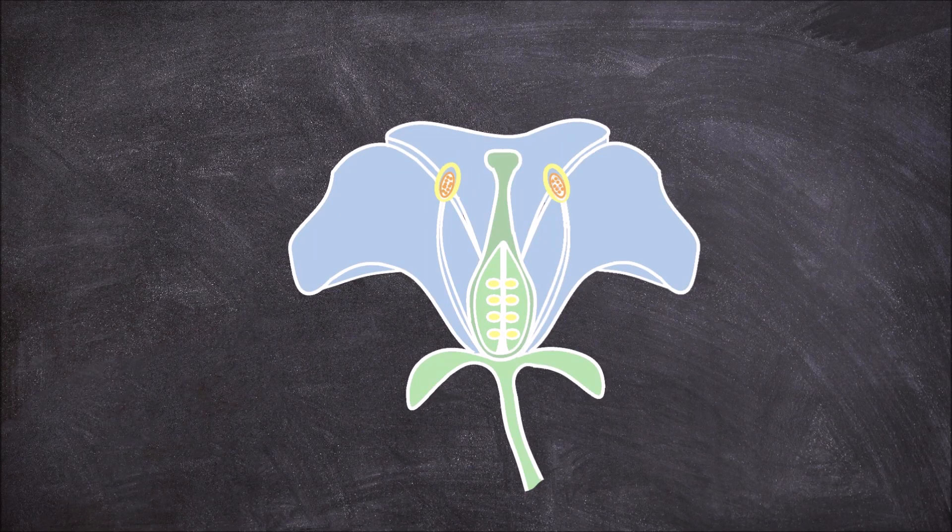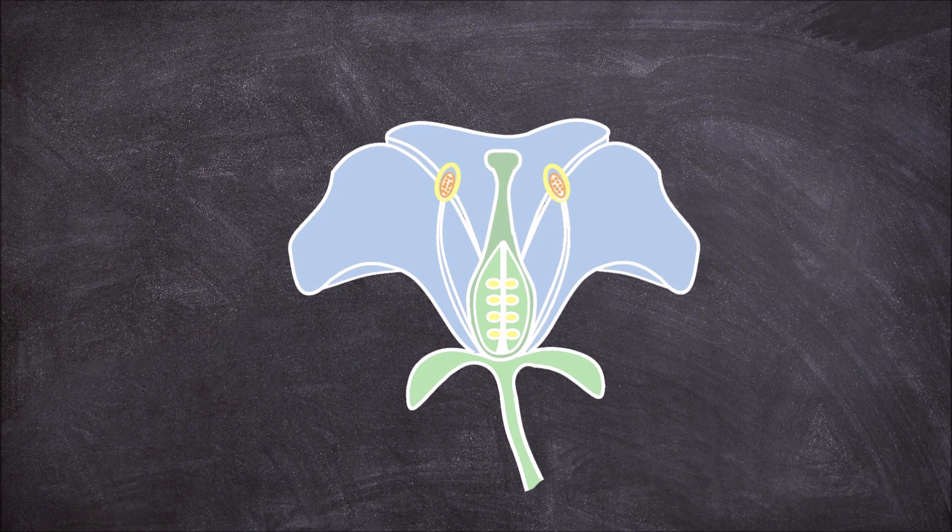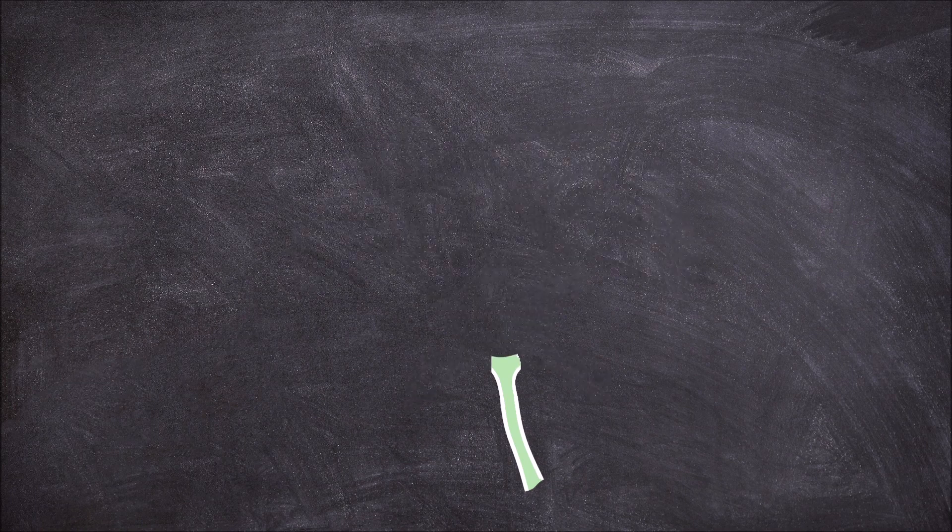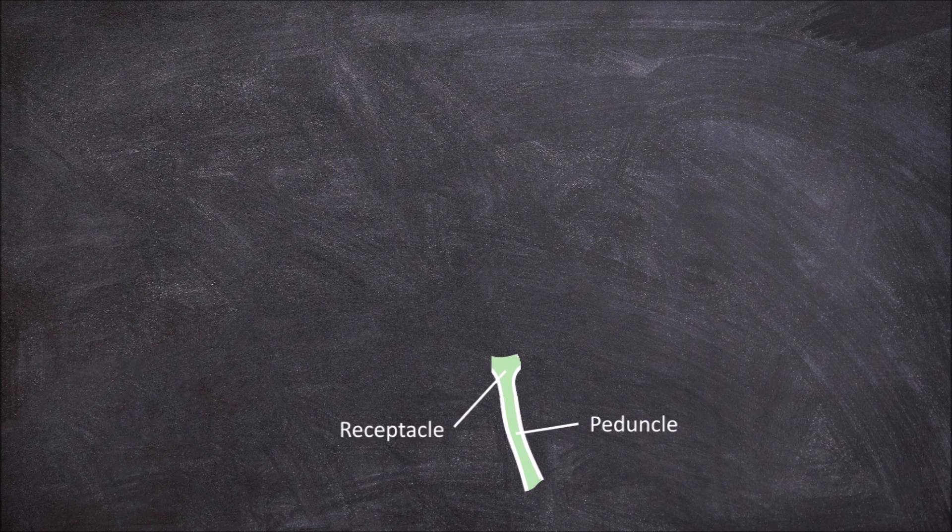In this video we are going to go over the structure of a flower. The flower is a modified shoot. The stalk leading up to the flower is called the peduncle, and the part of the stalk where the flower attaches is called the receptacle.